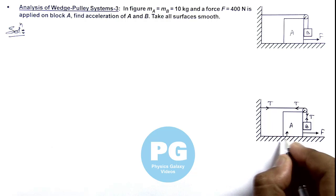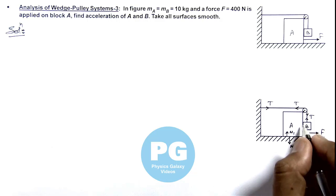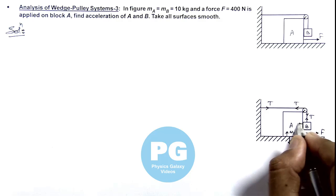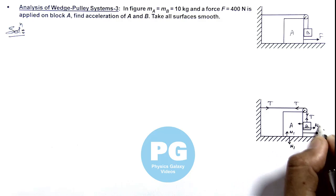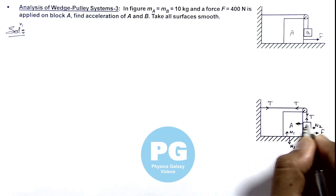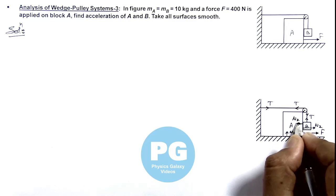And a normal reaction will act on block A due to ground that is N1 and on ground also this will be in downward direction. And on block B, a normal reaction will be there which is N2. On both the blocks it will be acting in opposite direction.